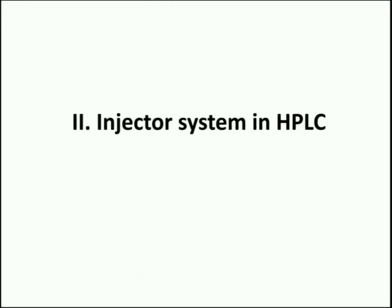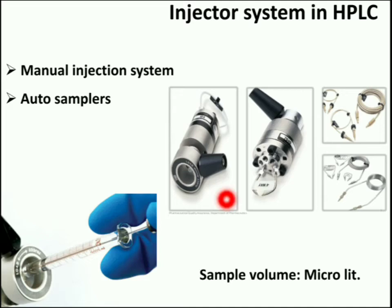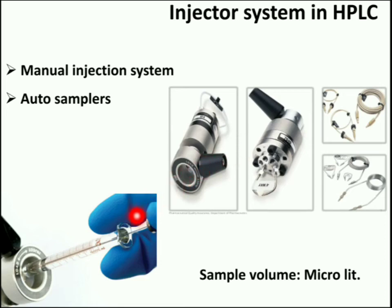The second part of the HPLC system is the injector. An HPLC injector allows the introduction of a precise sample volume onto the column. An injector system is composed of a sample holder unit and a microsyringe. In HPLC, the injector is placed next to the pump. The simplest method is to use a microsyringe, and the sample is introduced into the flow of eluent.